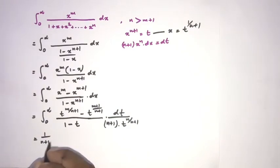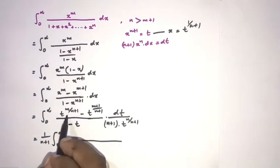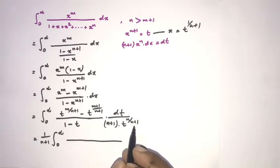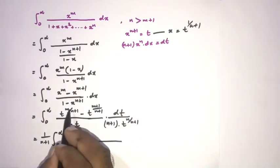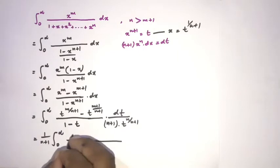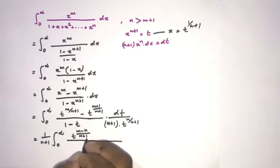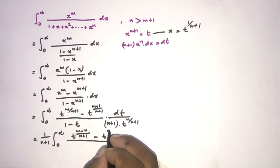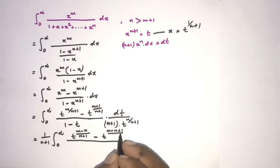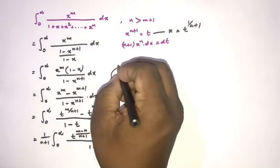We can simplify — 1/(N+1) is a constant — giving 1/(N+1) times the integral from 0 to infinity. Combining powers in the numerator: t to the M/(N+1) divided by t to the N/(N+1) gives t to the (M minus N)/(N+1), and similarly the second term becomes t to the (M minus N + 1)/(N+1), all over (1 minus t) dt.